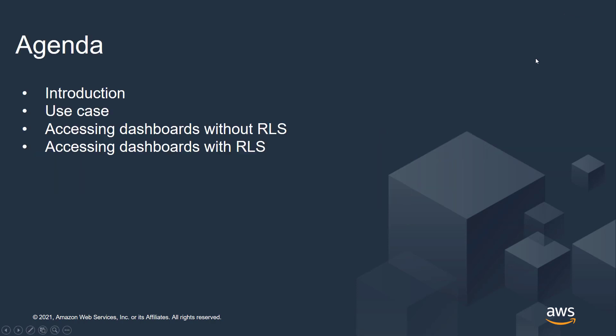Let me walk you through the quick agenda. First, I will introduce what Amazon QuickSight is. Then I will talk about a particular use case where a customer with multi-tenancy wants to restrict data based on the users accessing the dashboard from different customers. Then I want to show you a working example of accessing the dashboard without any row-level security rules set up, and once those rules are set up, how the access to the dashboard changes.